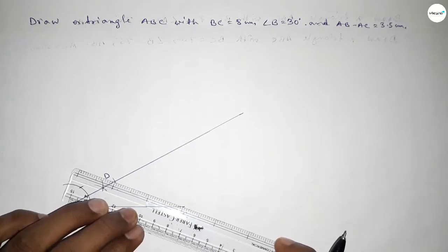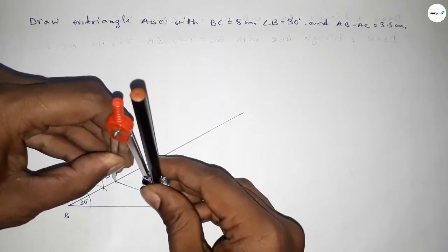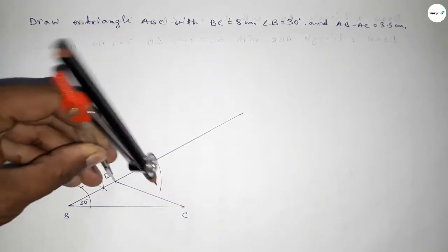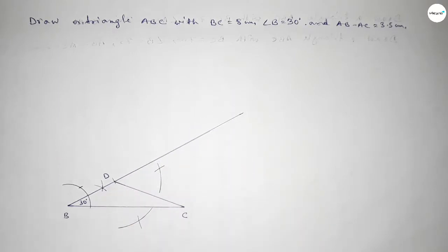Now joining D and C point. Next, bisecting CD line. So taking greater than half of CD and drawing arc by this way, with same length and cut here and cut here.